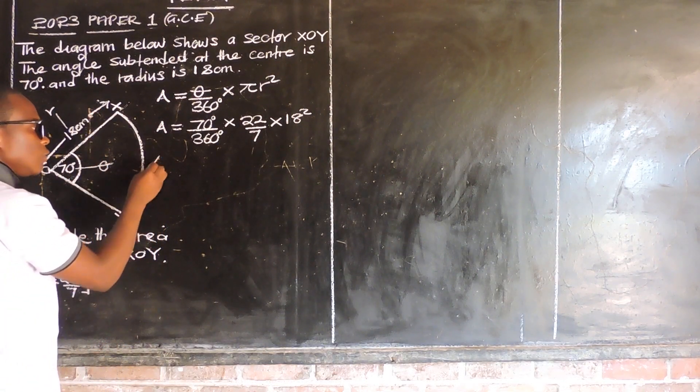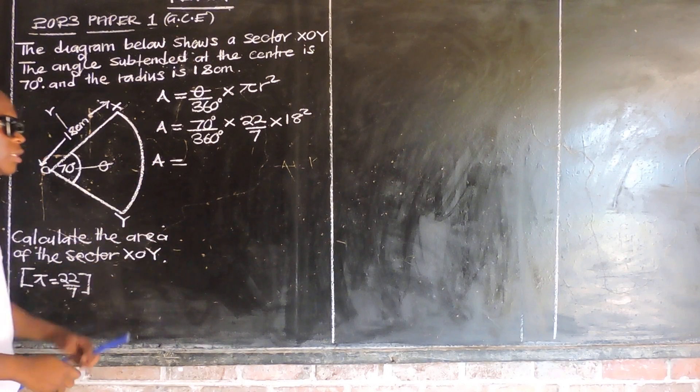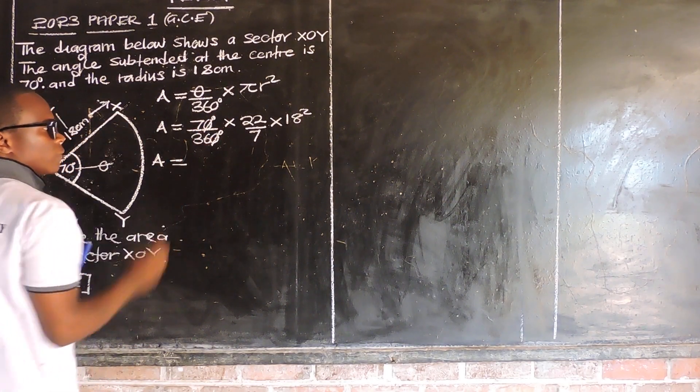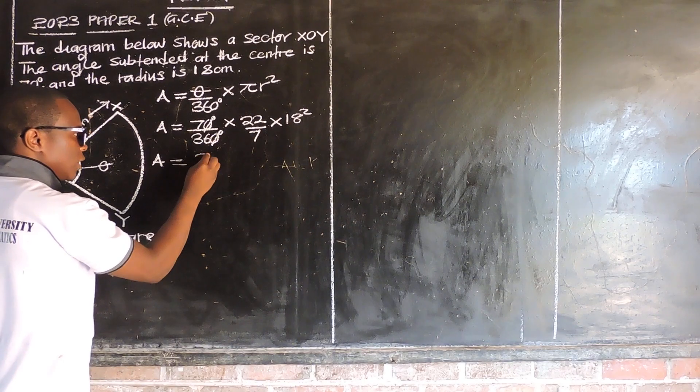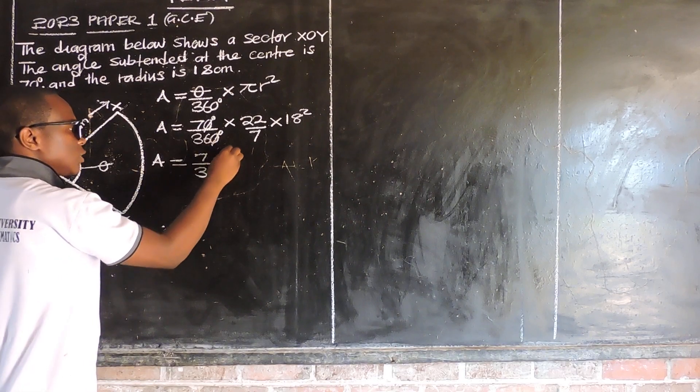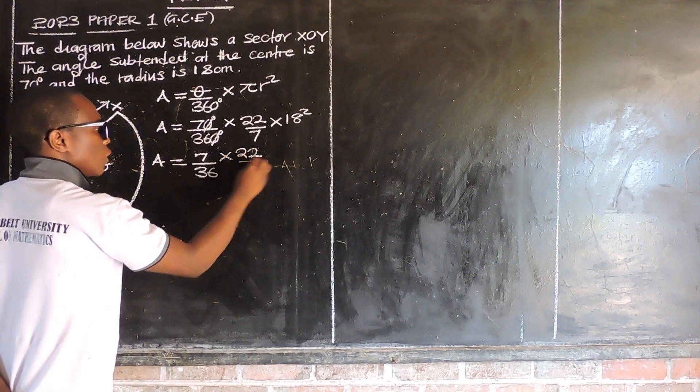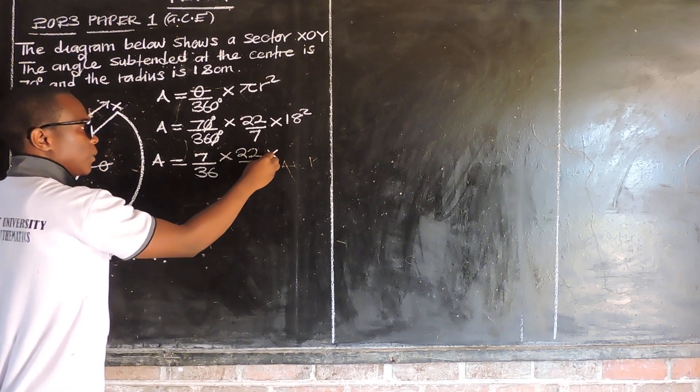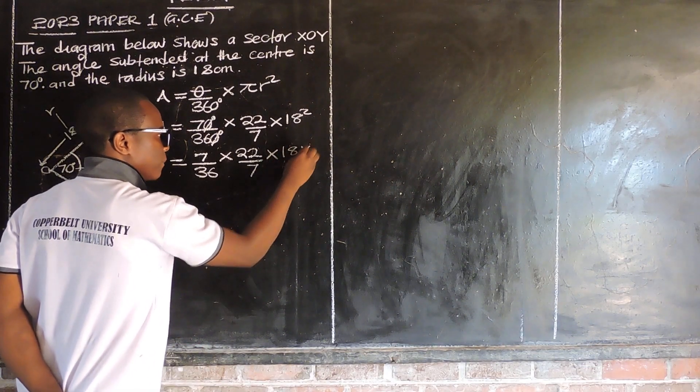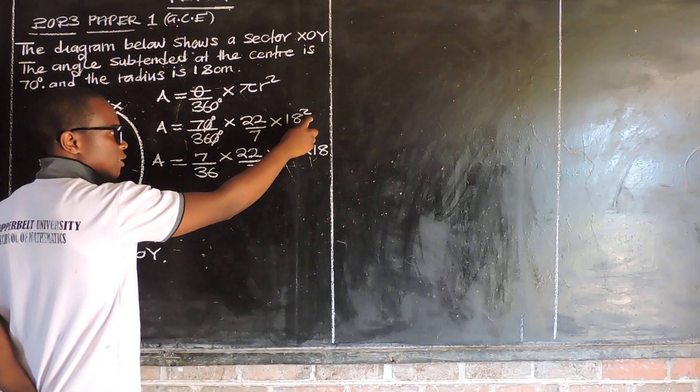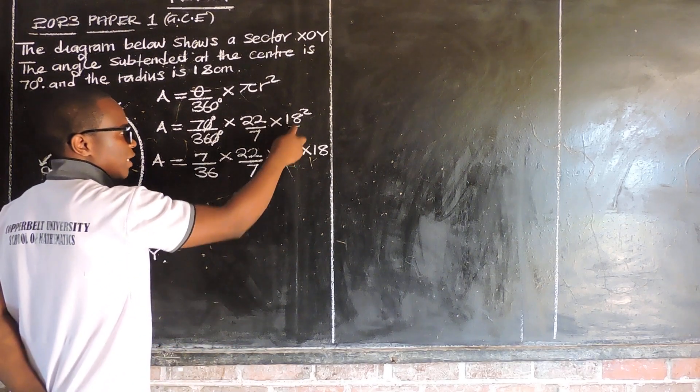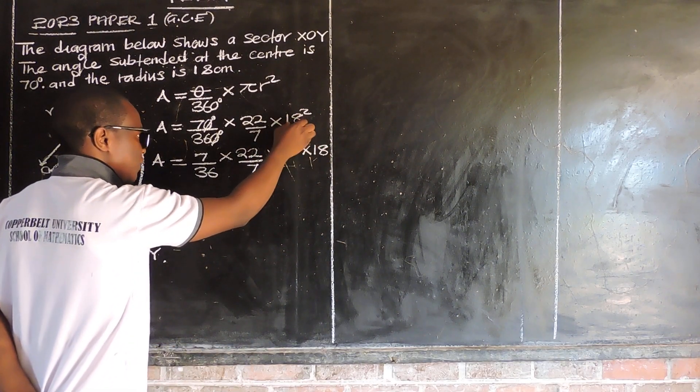So we can move on and say area is equal to 70 degrees over 360 degrees multiplied by pi, which has been given to be 22 over 7, multiplied by the radius is 18. So we're going to say 18 squared since the radius in the formula has been squared. Now since you're not allowed to use calculators, the best thing you can do is you reduce these figures. So you can say this 0 and this 0 can go. So what are we remaining? We are remaining with the 7 as a numerator over 6 as a denominator multiplied by 22 over 7. Then we multiply it by 18 squared, which is the same as 18 by 18.